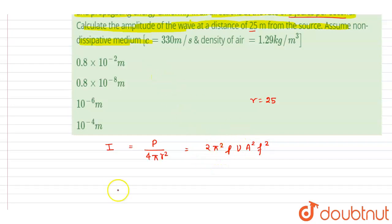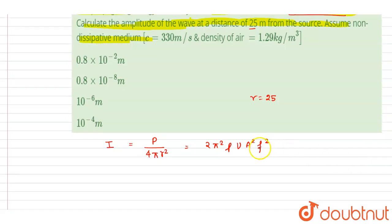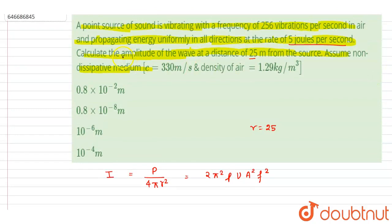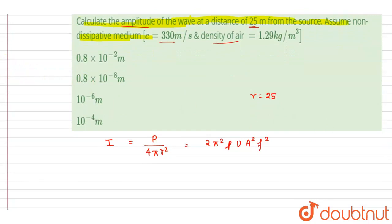Right, we know this. So you can just put the values to get the amplitude. If you see here, we want the amplitude, so you can put the value of power, r, ρ, and the speed to get the amplitude.